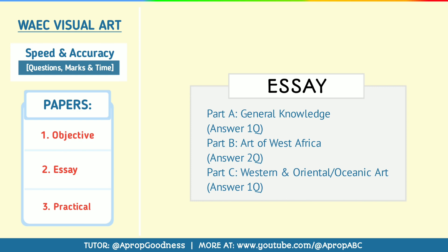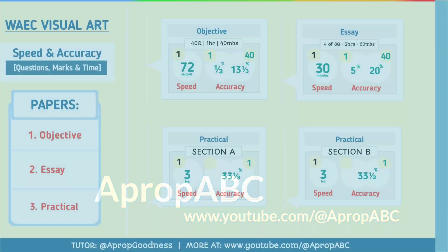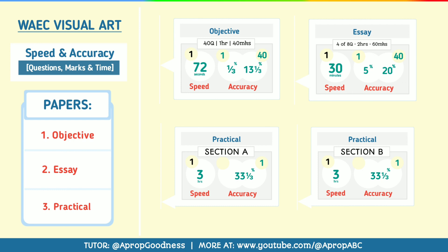For the second paper, which is theory, you have three parts. You will be required to pick four questions out of the eight questions they will give you in these three parts. That covers two hours and it will be 60 marks. For the speed and accuracy test: for speed, you must be as fast as 30 minutes per question, and if you are accurate per question, you tend to get five percent. That means in objective, if you are accurate, you have 13.33%. In theory, if you are accurate overall, you have 20%. So objective plus theory is 33%, and the rest from 100% is for drawing and creative design.